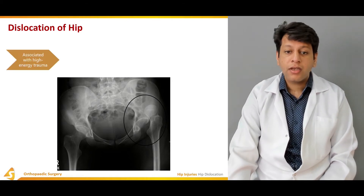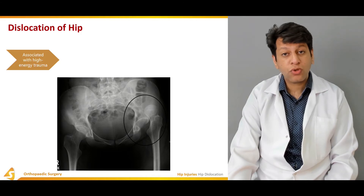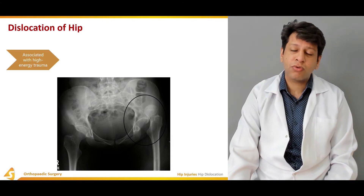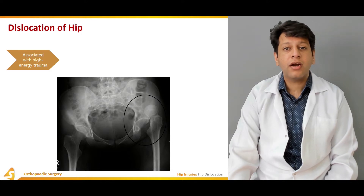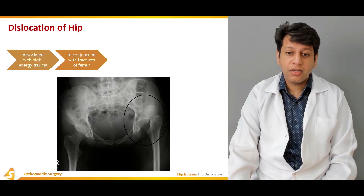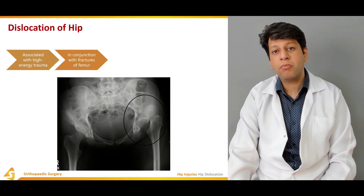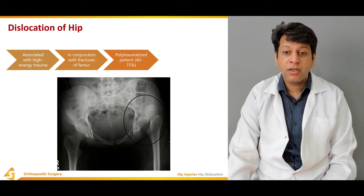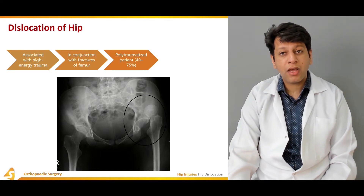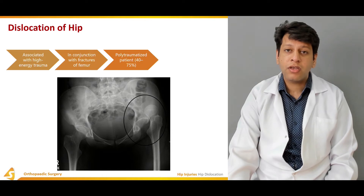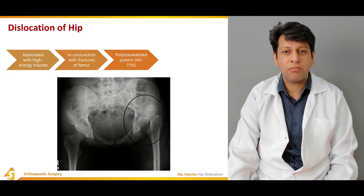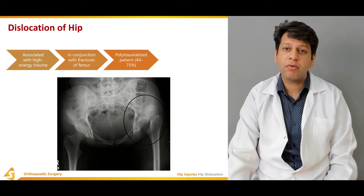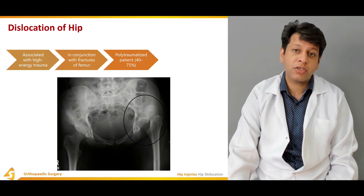Hip dislocation is usually associated with high energy trauma — rarely with trivial falls, unless the patient is an older osteoporotic individual with a tendency toward previous hip dislocations. It is usually seen in conjunction with fractures of the femur — neck, head, or even shaft fractures. Most commonly it is a polytrauma patient involved in an RTA or high-energy vehicle collision, also associated with chest injuries, contralateral femur fracture, or ipsilateral tibia fracture.